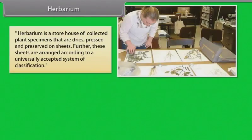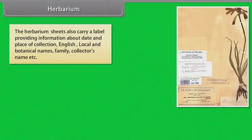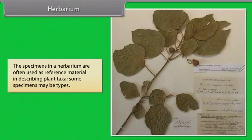A herbarium is a storehouse of collected plant specimens that are dry, pressed and preserved on sheets. These sheets are arranged according to a universally accepted system of classification. The herbarium sheets carry a label providing information about date and place of collection, English, local and botanical names, family, and collector's name. Specimens may be whole plants or plant parts, usually in dried form, but may also be kept in alcohol or other preservatives. Specimens in a herbarium are often used as reference material in describing plant taxa.